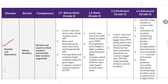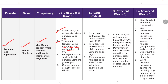Now let us see a few important questions. First, from the domain Number and Operation, standard Whole Number, competency: identify and count whole numbers and identify their relative magnitude. Key topics include: count, read and write whole numbers up to 999; skip count forward using 2, 5, and 10; form greatest and smallest three-digit numbers; compare numbers using objects up to 999; then the same up to 9999; form greatest and smallest four-digit numbers; and compare whole numbers up to 9999 based on place value.